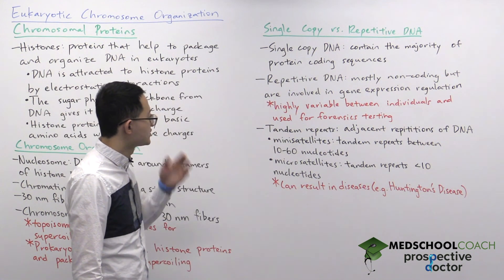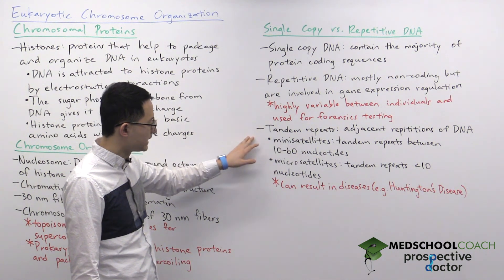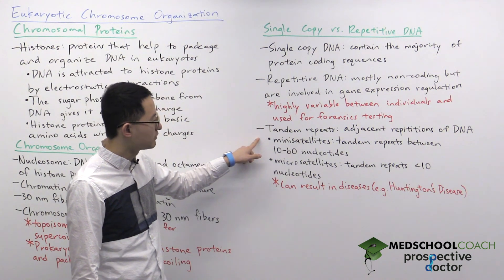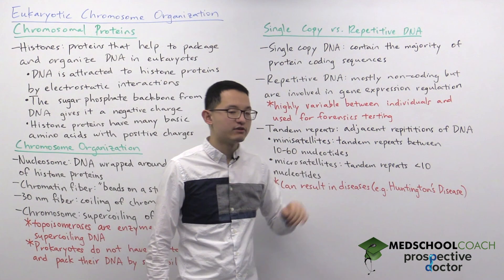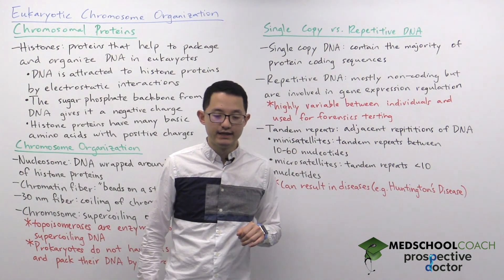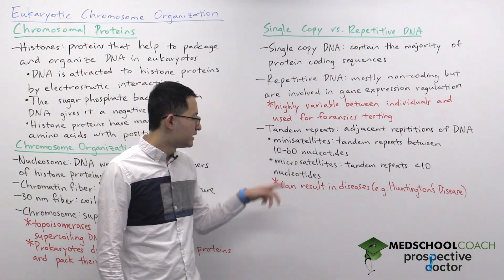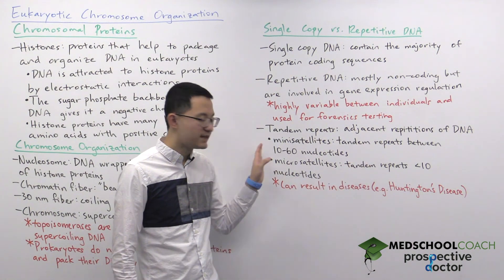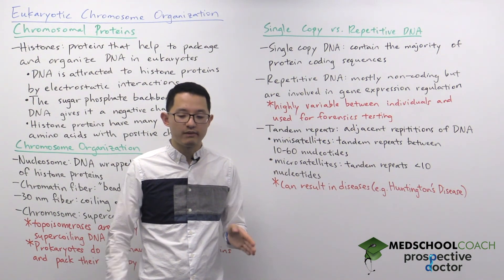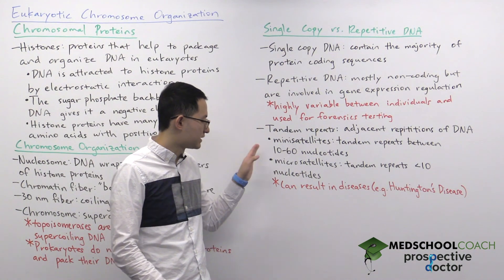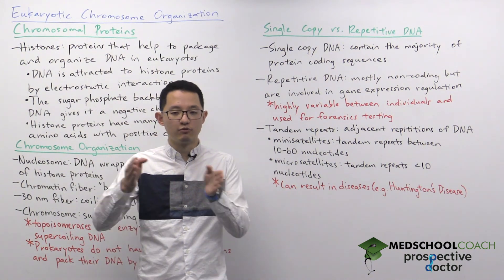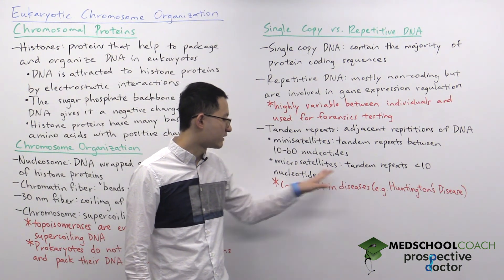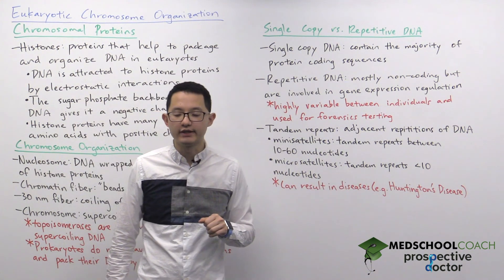Next, we need to talk a bit more about repetitive DNA — there is some terminology you need to be familiar with for the exam. Tandem repeats are adjacent repetitions of DNA, and there are a couple of types. Minisatellites are tandem repeats that are 10 to 16 nucleotides long, meaning the repeating sequence is between 10 and 16 nucleotides and will repeat many times. Microsatellites are tandem repeats that are less than 10 nucleotides long.